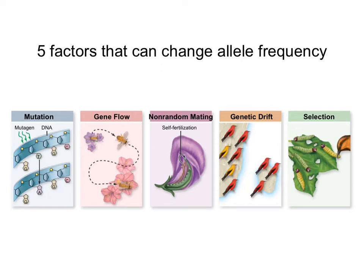When we introduced Hardy-Weinberg, we said there are five requirements for a population to be in genetic or Hardy-Weinberg equilibrium — that means their allele frequency remaining stable. Likewise, if those five things are not happening, that would change the allele frequency. So there are five factors that can change the allele frequency, and since changing the allele frequency is the way that populations evolve, there are five things that can result in evolution in a population.